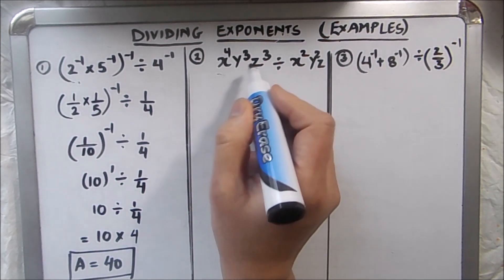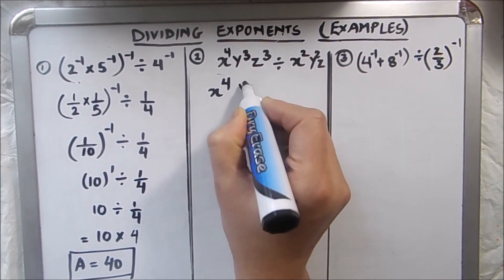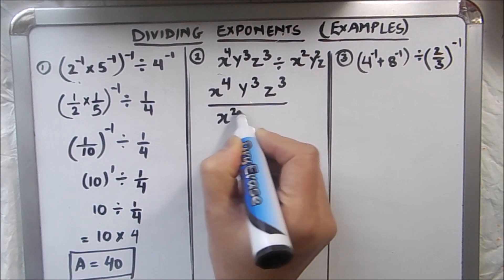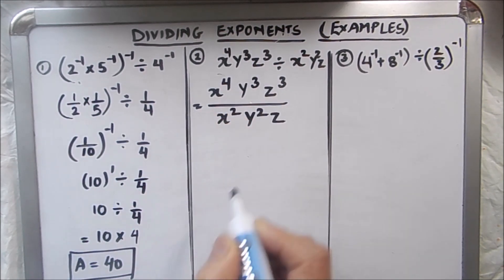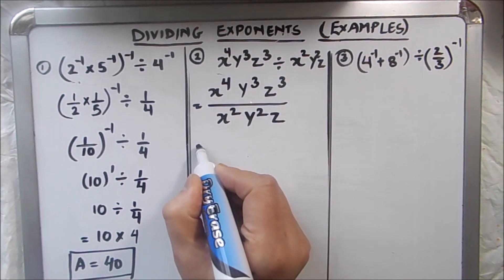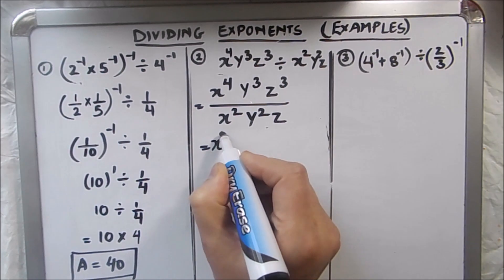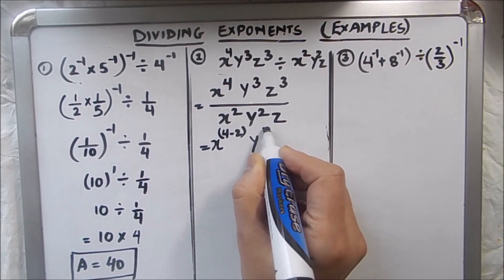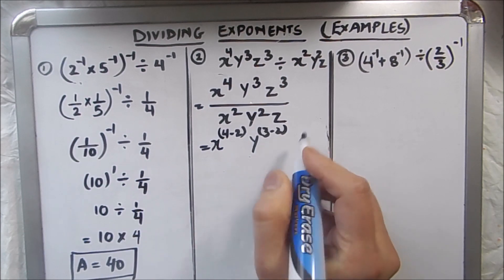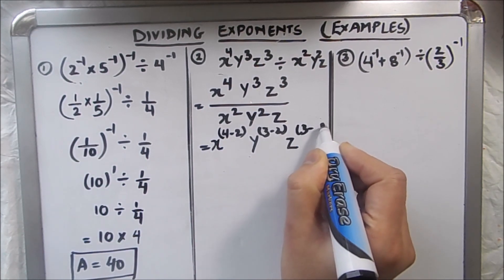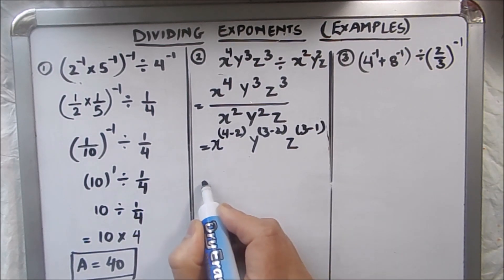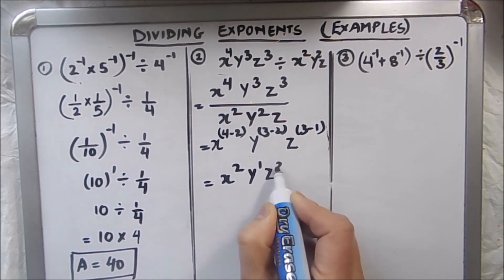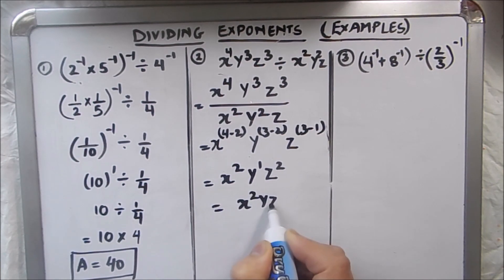Next example — there are variables here: x to the power 4, y cubed, z cubed, divided by x squared, y squared, z. Here, for each variable we subtract the denominator's exponent from the numerator's exponent: x gives 4 minus 2, y gives 3 minus 2, and z gives 3 minus 1. This gives x squared, y to the power 1, and z squared, so the final answer is x squared times y times z squared.